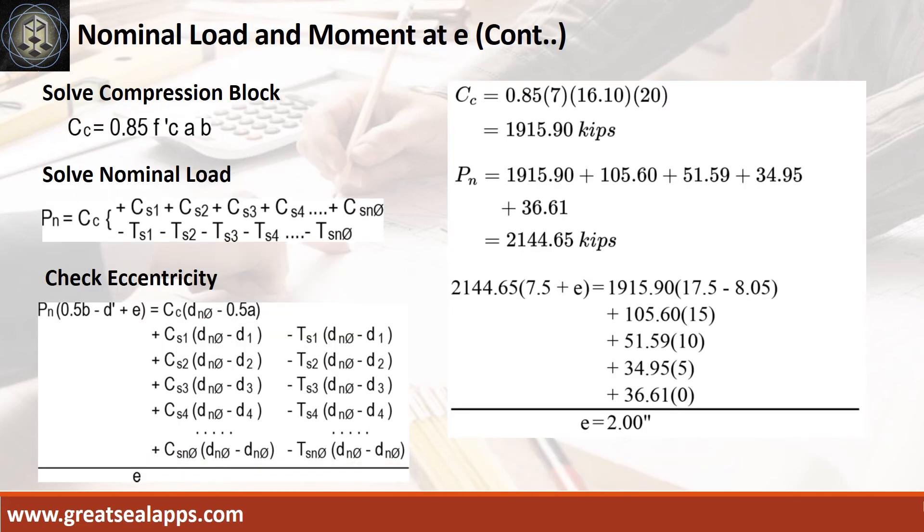Given Fc prime equals 7 kips and stress block is 16.1 inches by 20 inches, the force of compression block is 1,915.9 kips. By summing up all the forces, the nominal axial load is 2,144.65 kips.